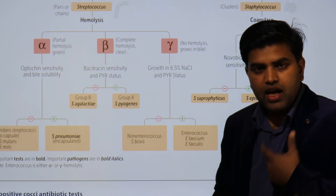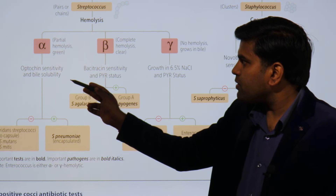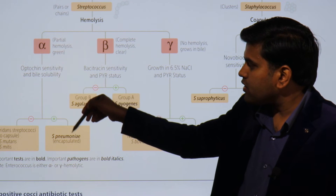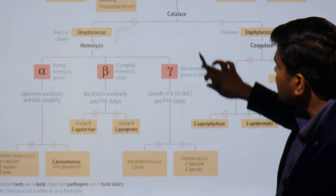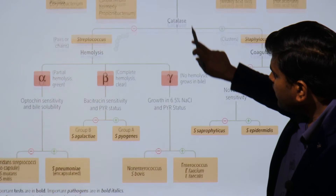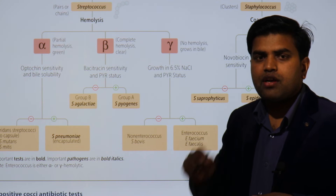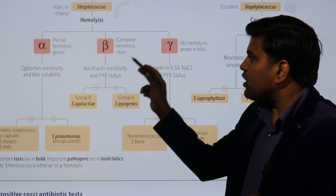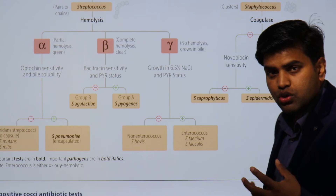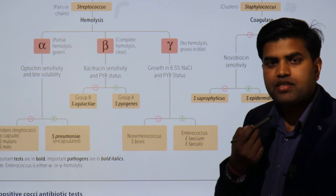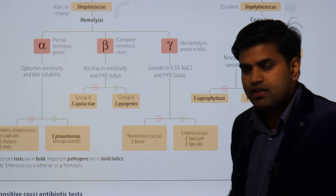So Streptococcus pneumoniae is optochin-sensitive and bile-solubility test-positive. Now there is another group of organisms that on blood agar gives complete hemolysis — a clear zone around the organism. These are the beta-hemolytic group, which contains two organisms: Streptococcus pyogenes and Streptococcus agalactiae. Streptococcus pyogenes causes streptococcal pharyngitis, leading to post-streptococcal glomerulonephritis or rheumatic heart disease. Streptococcus agalactiae is responsible for neonatal meningitis and neonatal death.